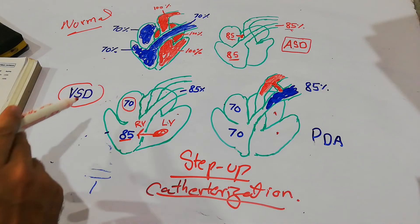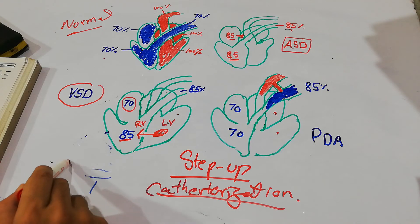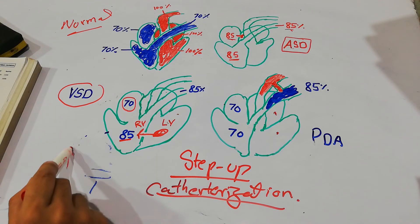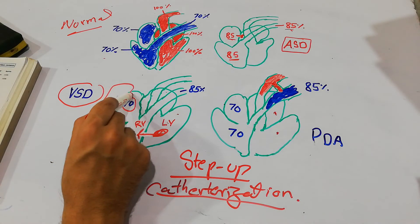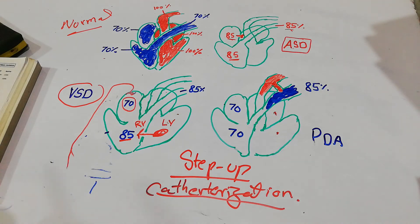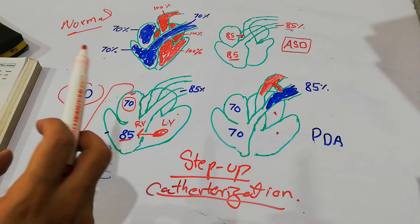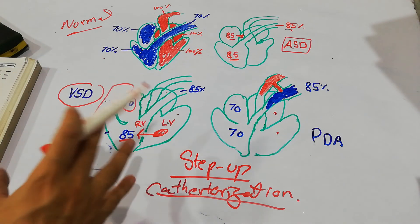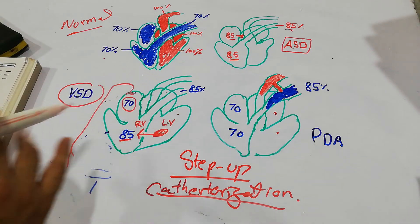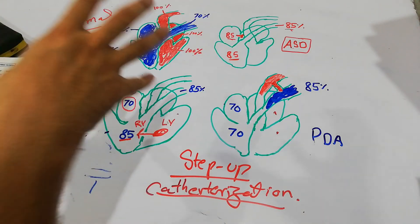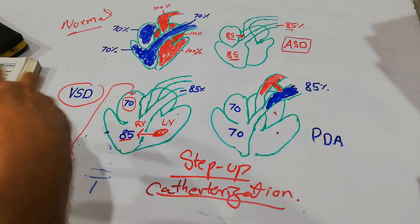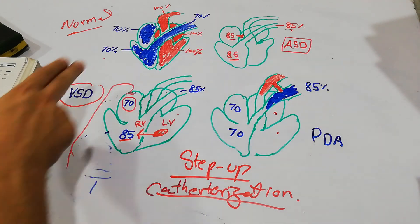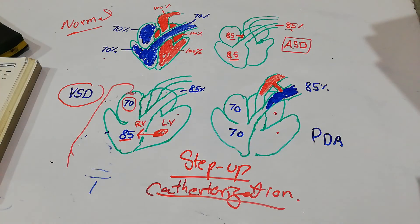These saturation levels in different chambers can be confirmed with cardiac catheterization. A catheter is passed through the radial artery or another blood vessel into the different chambers of the heart, where it takes blood samples and measures the oxygen saturation in each chamber. The step-up changes in saturation can thereby help in the diagnosis of ASD, VSD, or PDA.